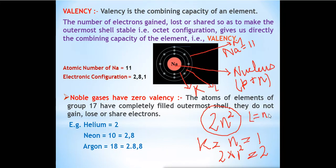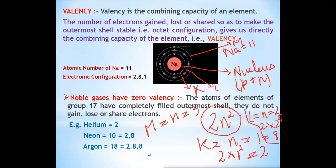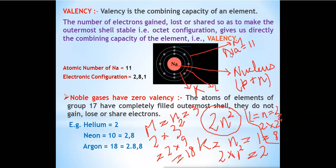For the M shell, n equals 3, so 2 × 3² = 2 × 9 = 18 electrons can be present. So in the K shell always two electrons can be present, in the L shell always eight electrons, and in the M shell always eighteen electrons — not more than that. This was the concept about the shells.